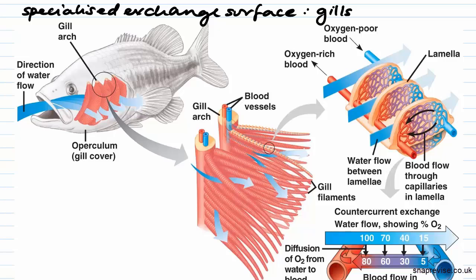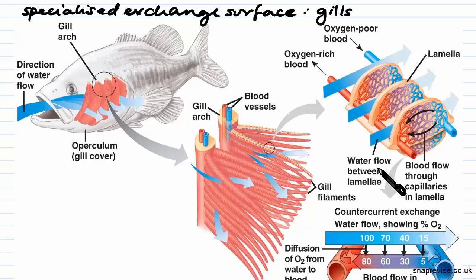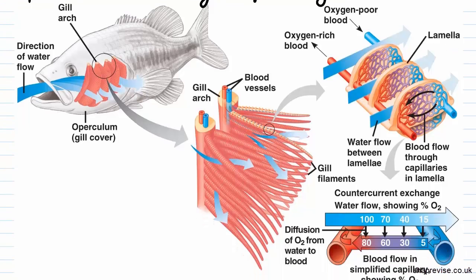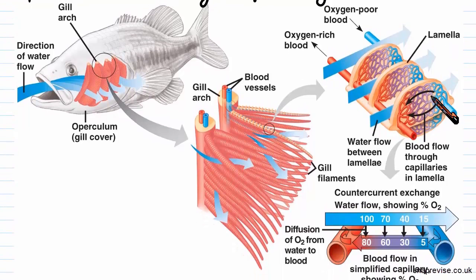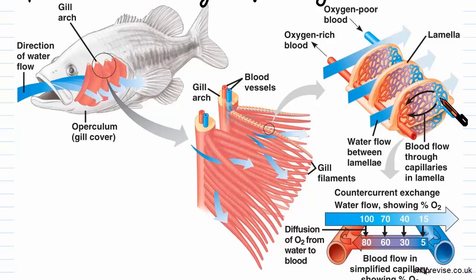Water is taken in through the mouth and it flows over these gill filaments and therefore over these lamellae. You will notice in this diagram that the direction of blood flow through the capillaries in the lamella is in the opposite direction to the flow of water.